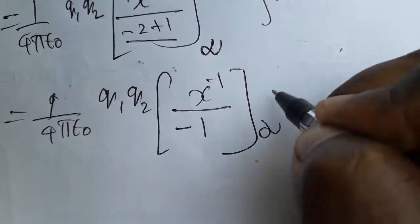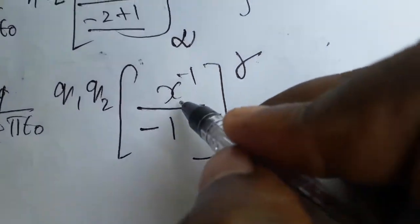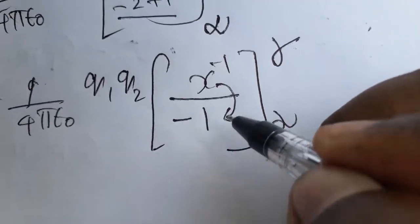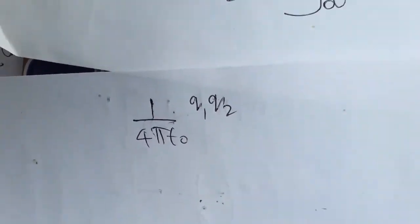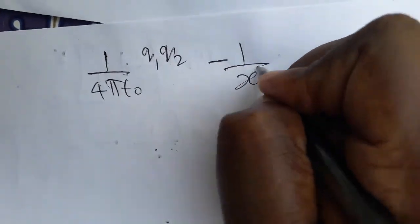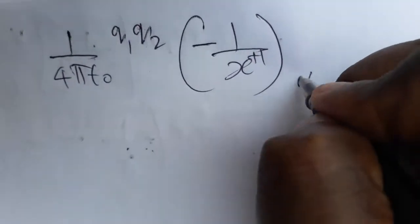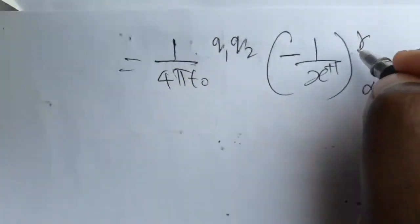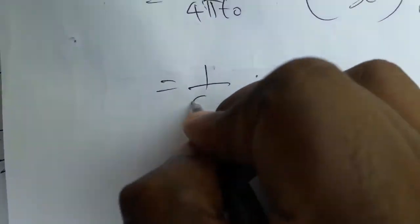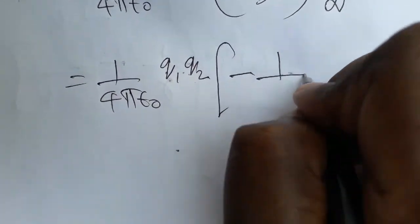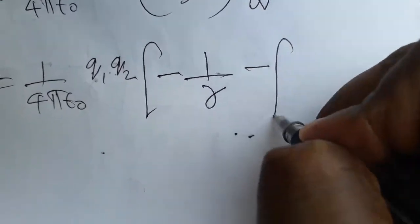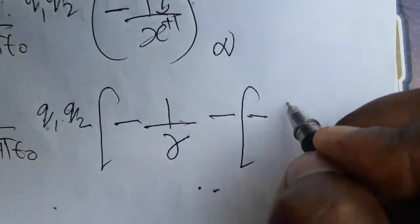Bringing x to the minus 1 from numerator to denominator, we get 1 over 4 pi epsilon naught times q1 q2 times minus 1 over x, with limits from infinity to r. The minus 1 changes sign to plus 1 overall. Applying the limits — higher limit first — we get: 1 over 4 pi epsilon naught times q1 q2 times minus 1 over r, minus minus 1 over infinity.